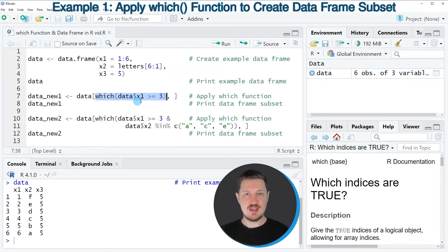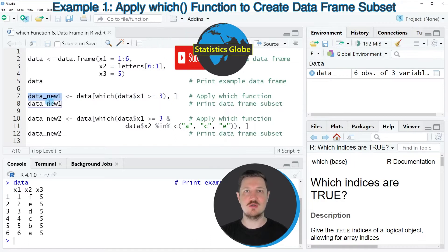And then I'm applying the which function within square brackets to subset our original data frame. And I'm also assigning the output of this to a new data frame object that I'm calling data_new1.